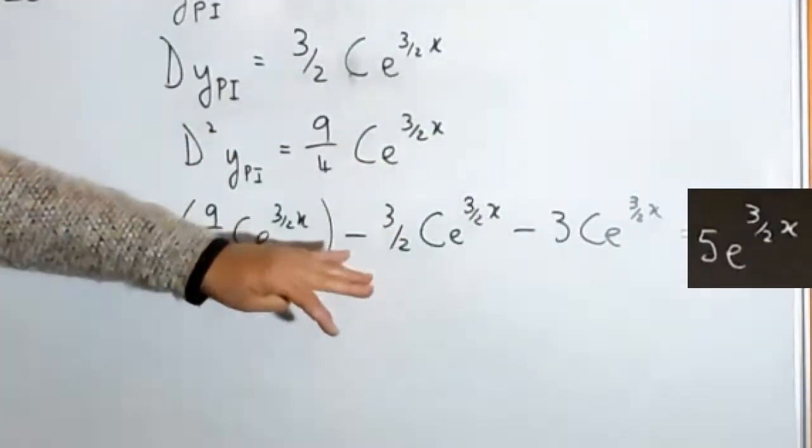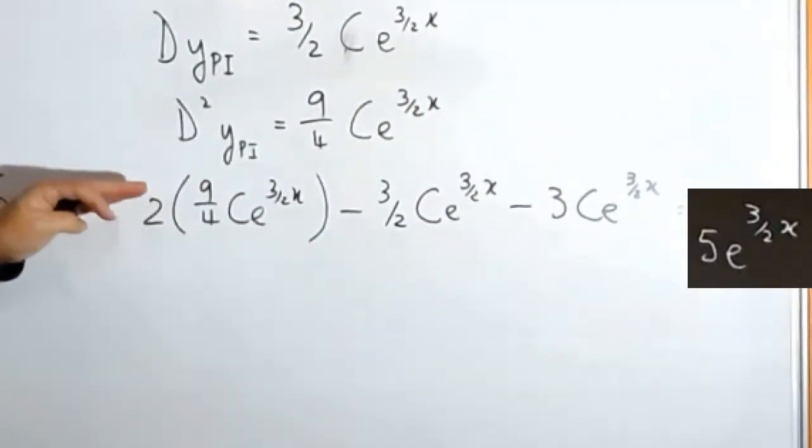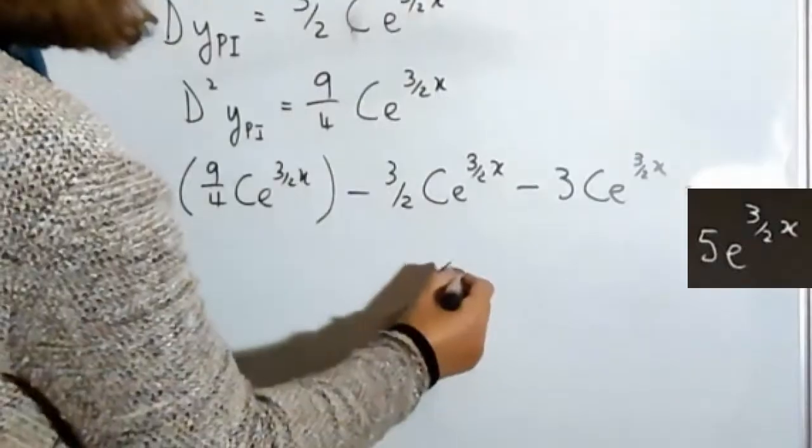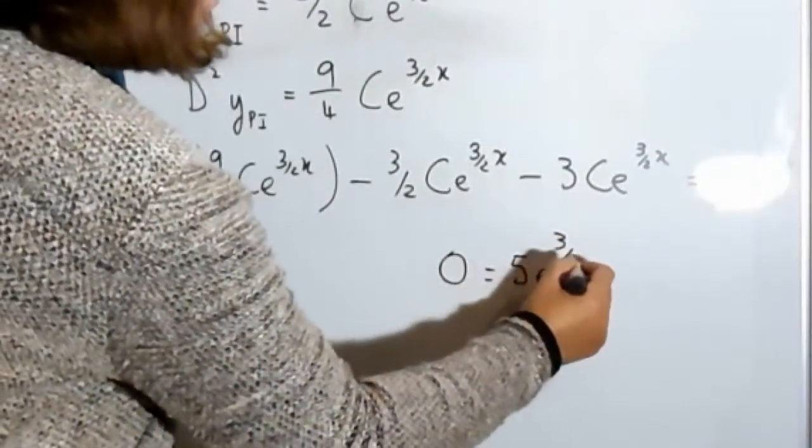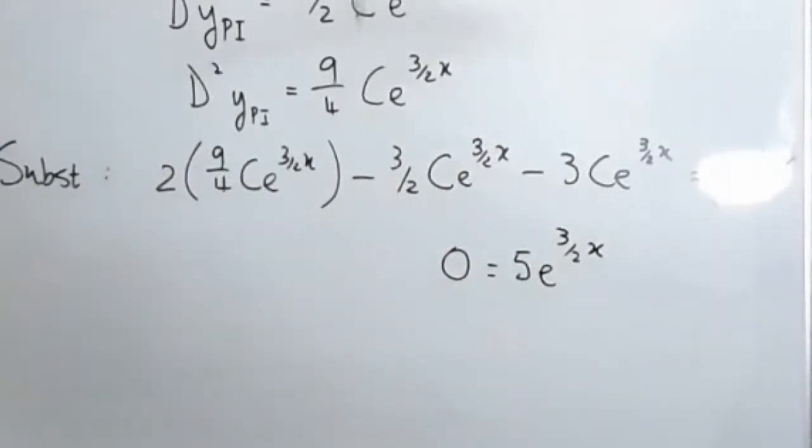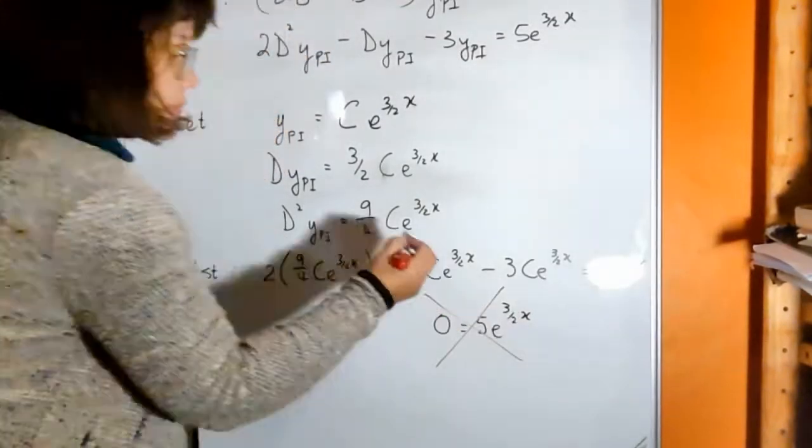And what you're going to find when you simplify your left-hand side, you're going to find that it's going to be 0 equals 5e to the 3 over 2x. And that is not possible. That's not possible.